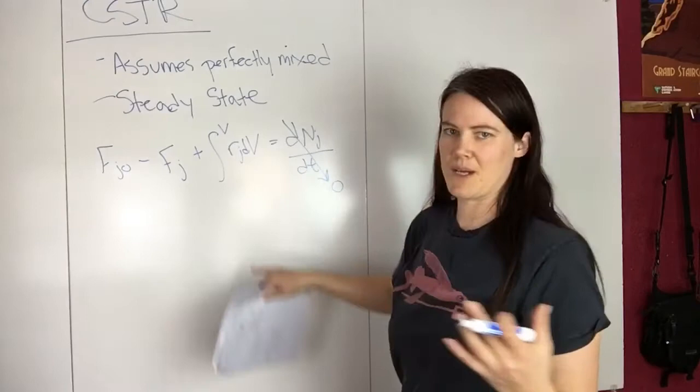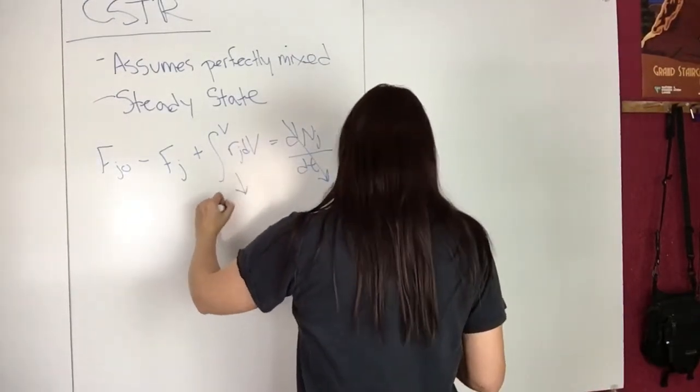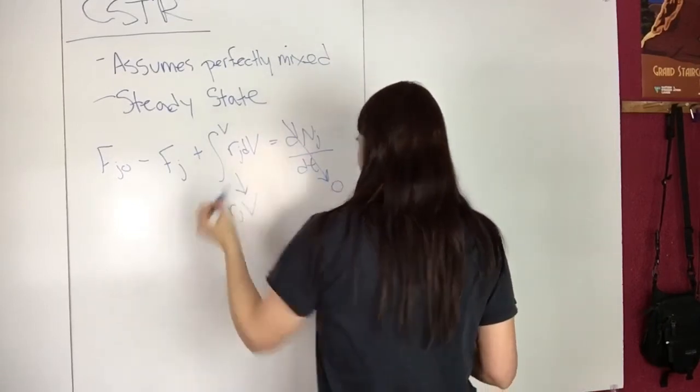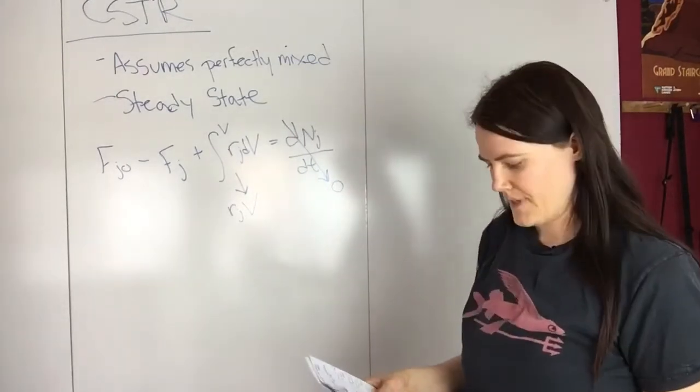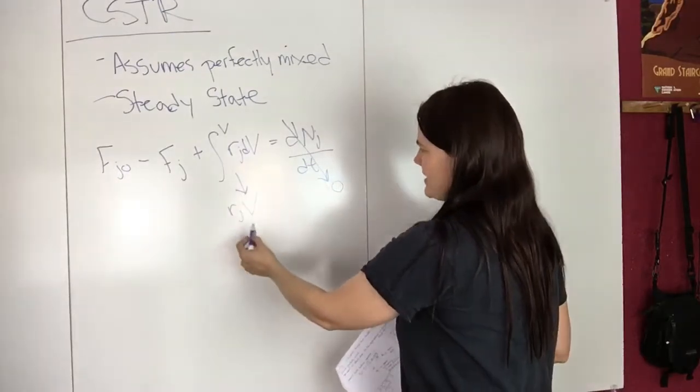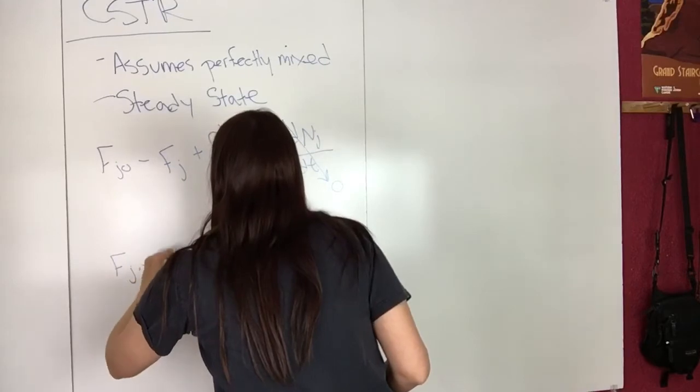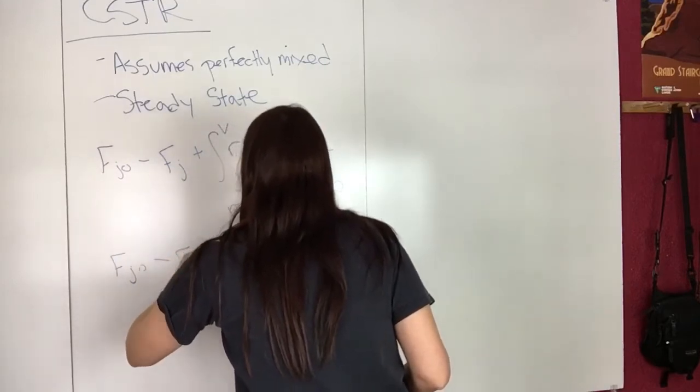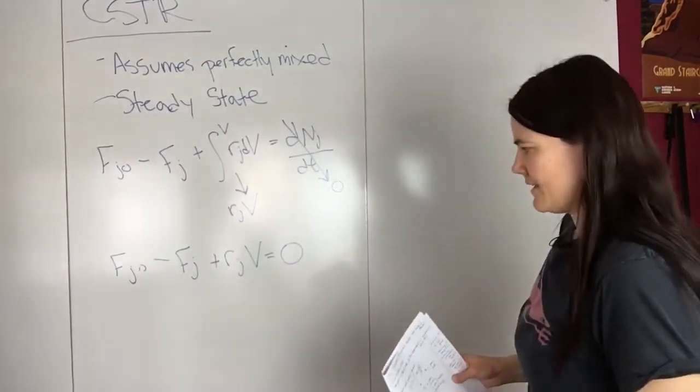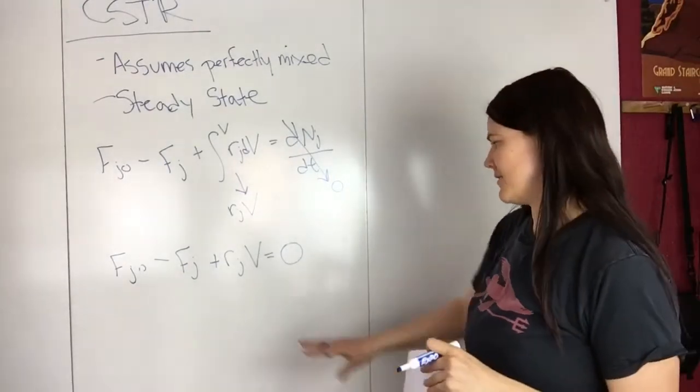The rate isn't dependent on position, so you can pull this out of the integral. You end up with RJ·V. Then you can rewrite this equation: FJ0 minus FJ plus RJ·V equals zero.